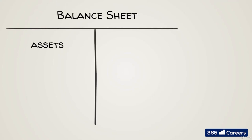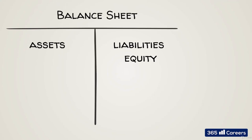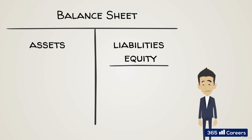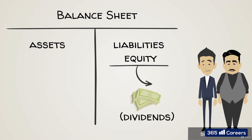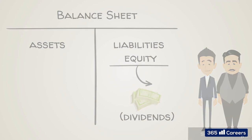On the same side of liabilities, we have ownership claims. This is capital the firm technically owes to shareholders. The firm won't repay shareholders literally, but will try to pay them a decent amount of dividends if its business succeeds over the years. Most frequently, ownership claims are referred to as shareholders' equity.